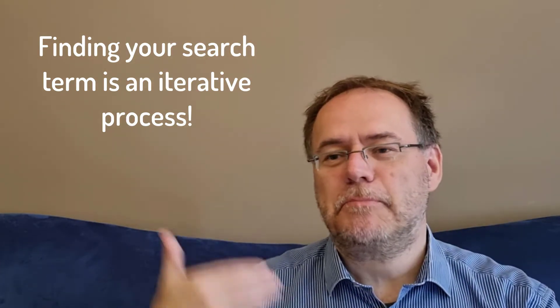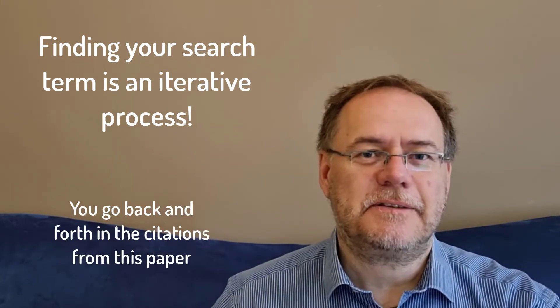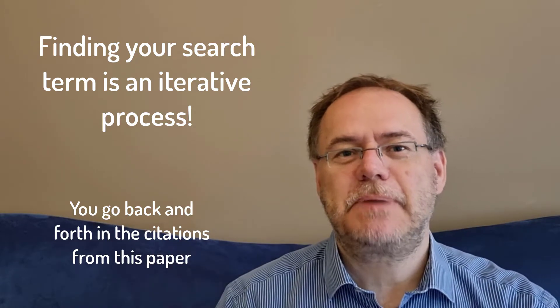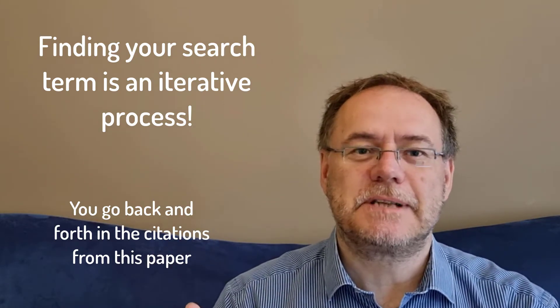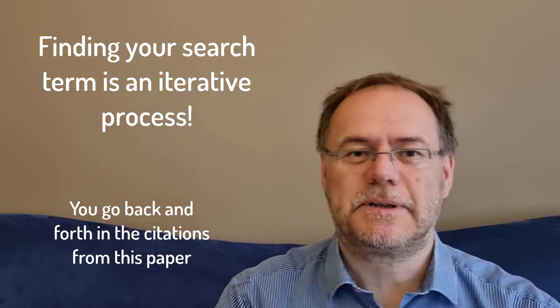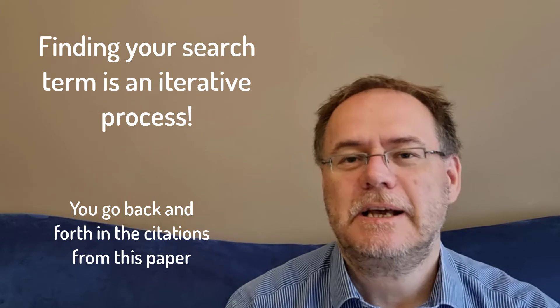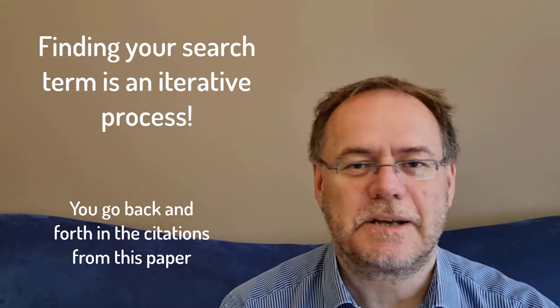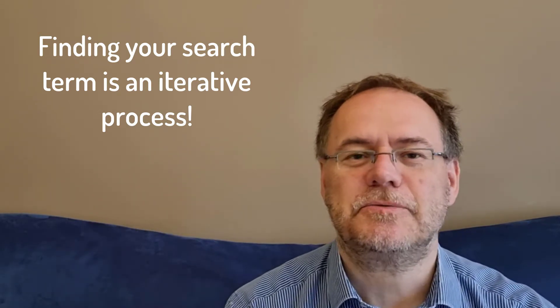And then what you do is you go back and forth in the citation history of this paper. So you look at all the papers that this paper cites that are relevant, and you look at all the papers that cite this paper. This is relatively easy to do in a lot of different search engines like Web of Knowledge or also Google Scholar.